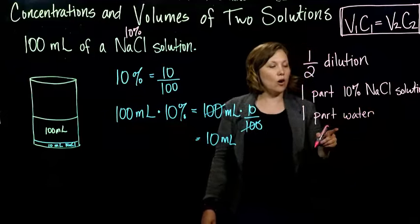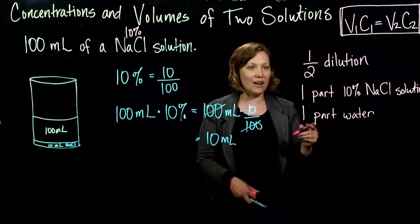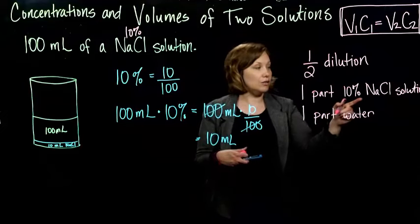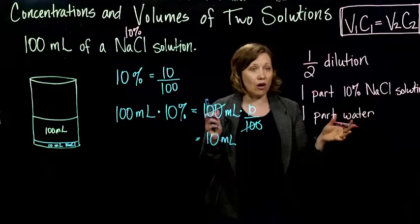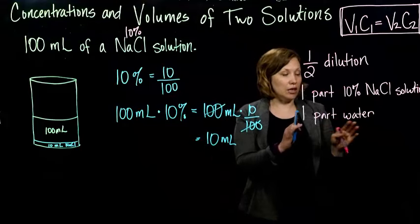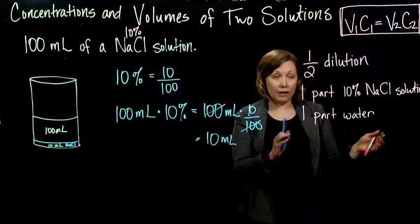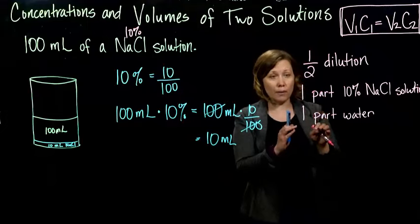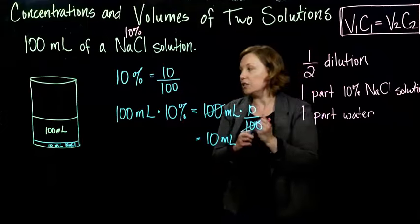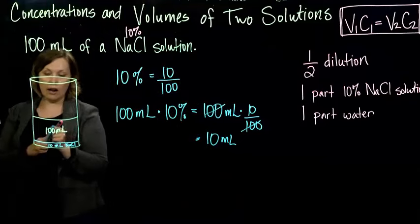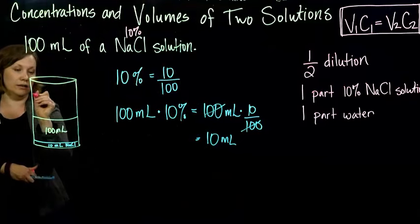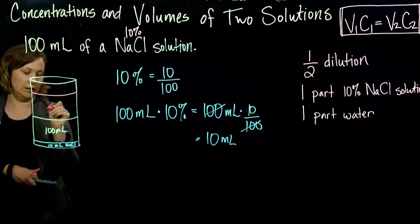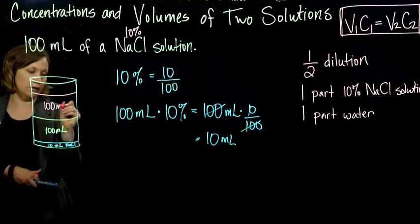All right, so if I have 100 milliliters of sodium chloride and I want to use all of it, of my 10% sodium chloride solution, I would add another 100 milliliters of water, right? So one part to one part means I add the same amount. So I'm going to add another 100 milliliters of water, and this is going somewhere, I promise.